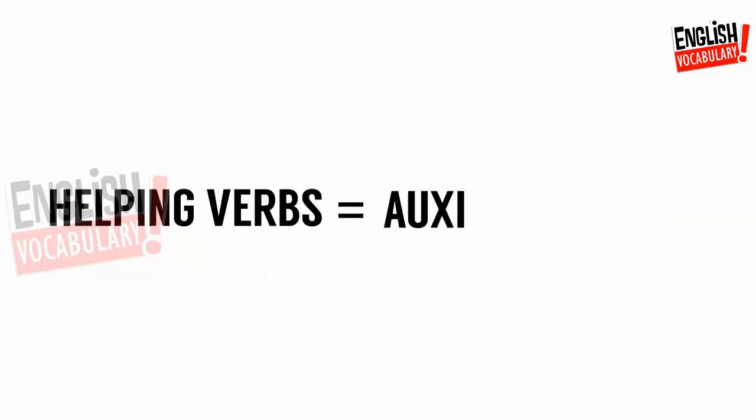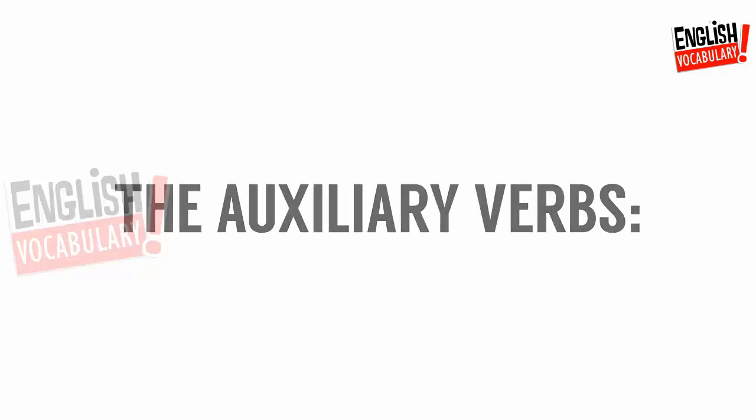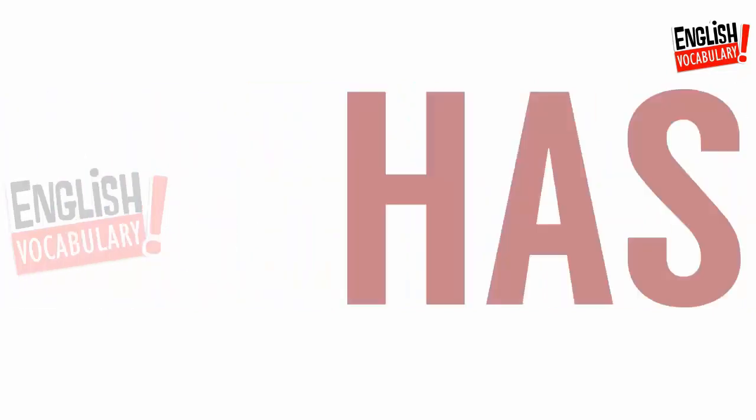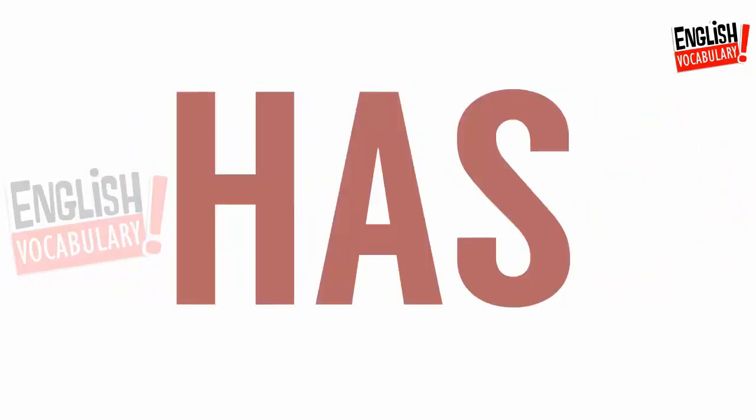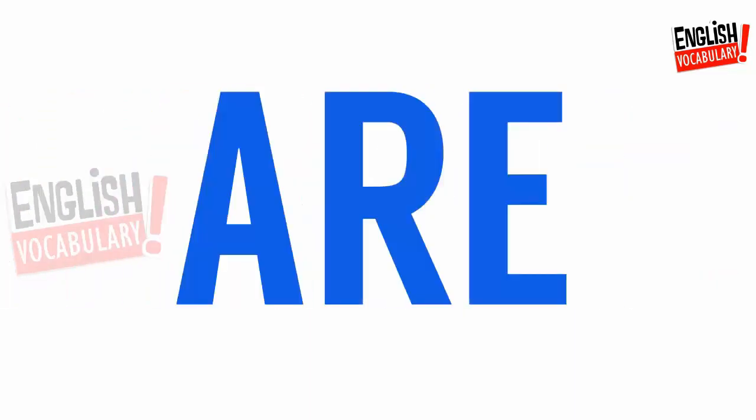would. Helping verbs equal auxiliary verbs. The auxiliary verbs are: do, does, did, has, have, had, is, am, are, was, were. Thanks for watching this video — hit a like, turn on the notification, and enjoy receiving more from English Vocabulary.